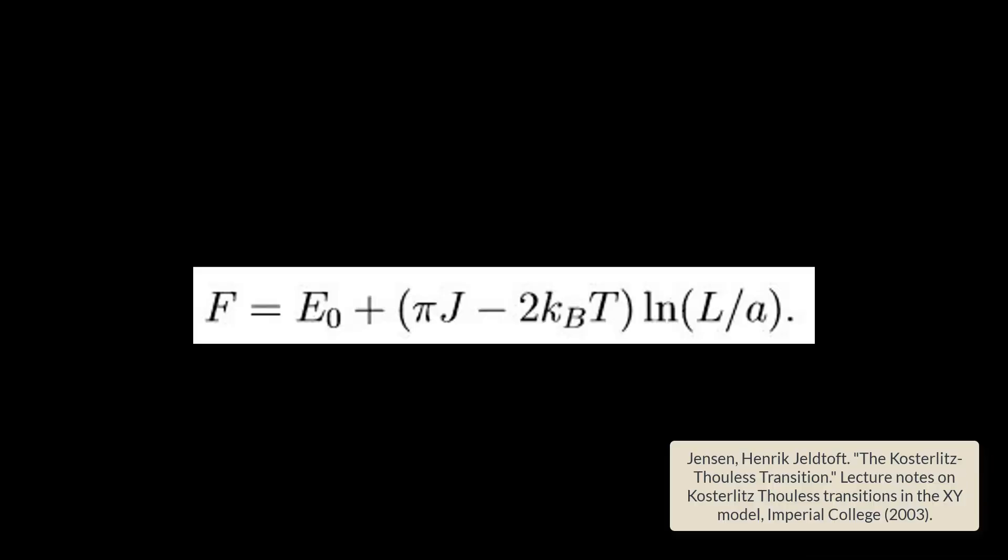In the XY model, the Helmholtz free energy is given by the displayed expression. In low temperatures, the energetic term in the Helmholtz free energy dominates, whereas in high temperatures, the entropic term dominates and vortices are created in order to lower the free energy. The KT transition occurs at the transition between an energetically dominated free energy and an entropically dominated free energy. The creation of vortices is the topological defect that allows for a phase transition instead of spontaneous symmetry breaking.